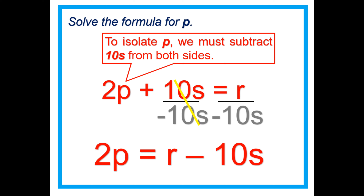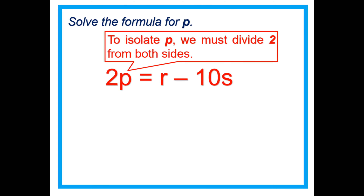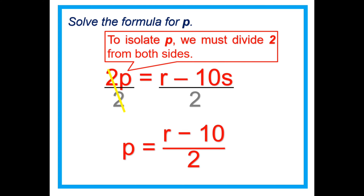We haven't isolated P yet. To isolate P, we must divide 2 from both sides: 2P divided by 2, and R minus 10S divided by 2. That cancels 2, giving us P equals R minus 10S divided by 2. That's it.